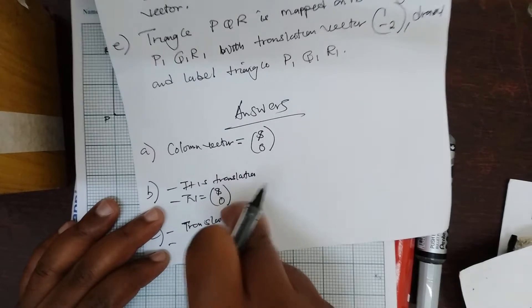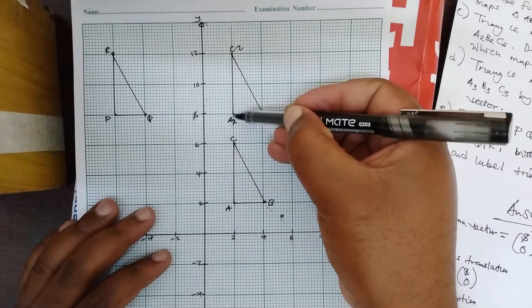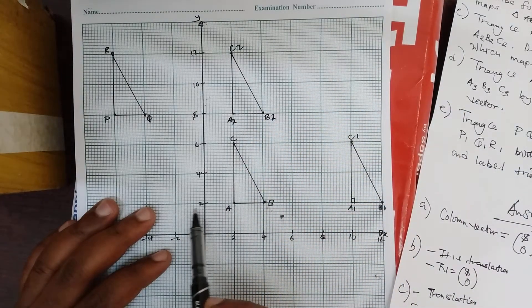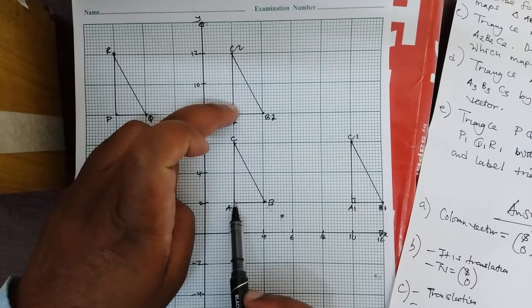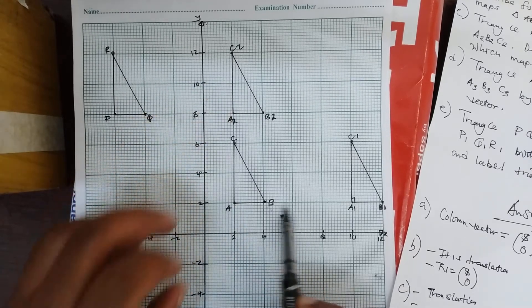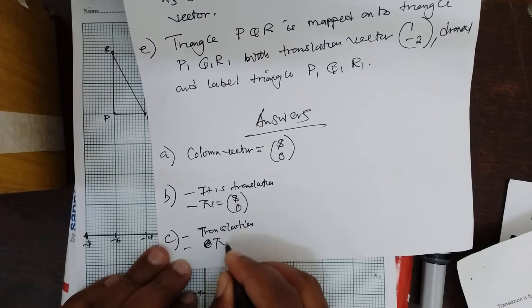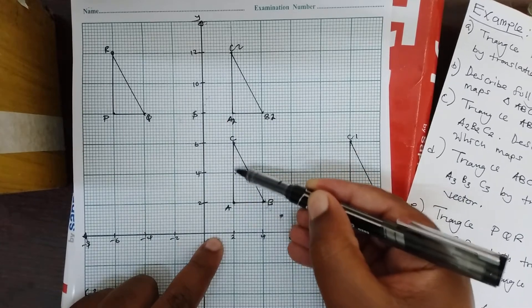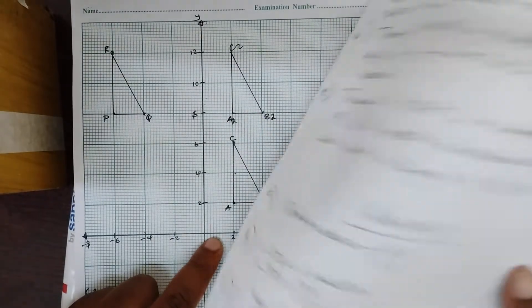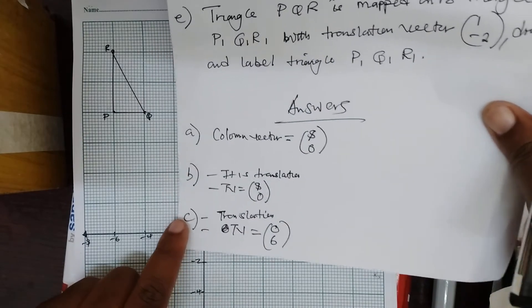For you to describe fully, you need to give a translation vector or column vector. You are going to look at A and A2. Have you made any movement along the x-axis to find A2? No, because you are in the same line — A and A2 are coinciding. So we have not made any movement along the x-axis; hence x is 0. How about y? You must move from here until you meet A: 2, 4, 6. Because you are going upwards, it will be positive. So it will be positive 6. This is your translation vector.